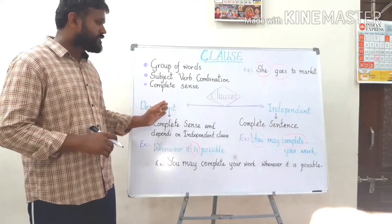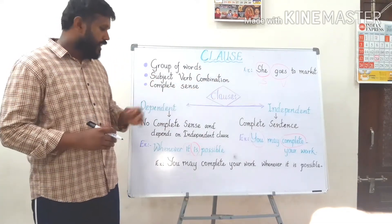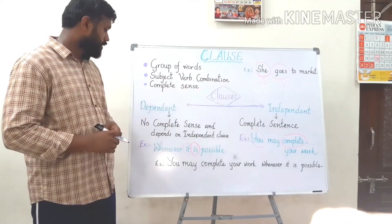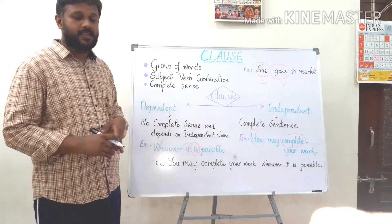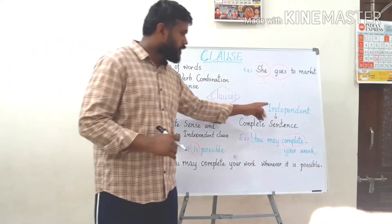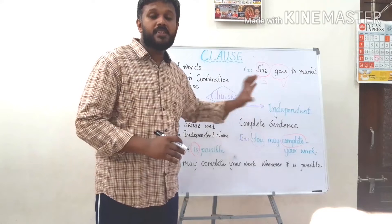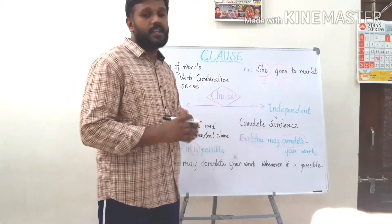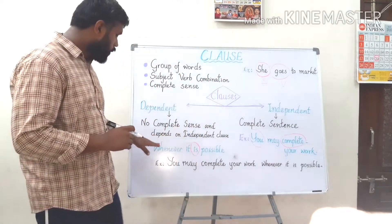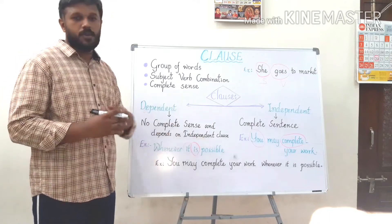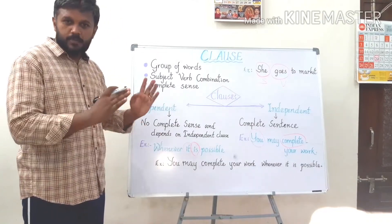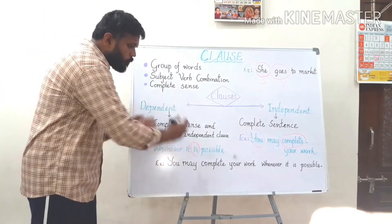Clauses are of two types: dependent and independent. Dependent, as the word indicates, is dependent on something — it has no complete sense and it depends on an independent clause. Whereas an independent clause has complete sense, it is a sentence and can stand on its own. Here we have an example: 'whenever it is possible' — of course you can find a subject and verb in it, it's a group of words, but it doesn't give complete sense.